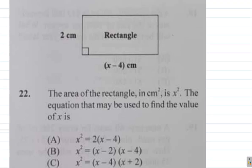So if you want to find the area of this rectangle, you're going to say the height which is 2 cm multiplied by the width which is x minus 4 cm.